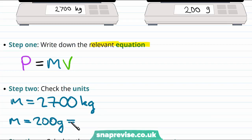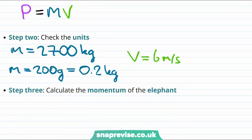On the other hand, the mouse's mass was given as 200 grams. But we need the mass to be in kilograms. To get from grams to kilograms, we divide by a thousand. So actually, the mass of the mouse should be written as 0.2 kilograms. The velocity, on the other hand, in both cases, is 6 meters per second, which is already the correct units for velocity in this equation. Now that we are happy that all of our units are correct, let's try calculating the momentum of the elephant.